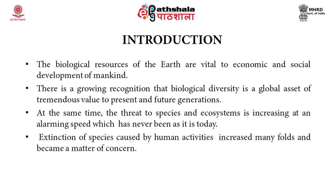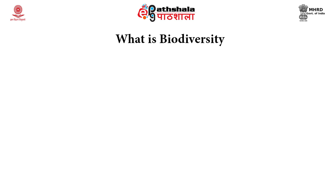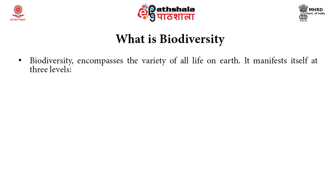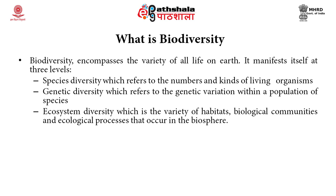To understand the Convention on Biological Diversity, it is very necessary to understand what is biodiversity. Biodiversity includes the variety of all life on earth. It manifests itself at three levels: number one, species diversity, which refers to the number and kinds of living organisms; number two, genetic diversity, which refers to the genetic variations within a population of species; and number three, ecosystem diversity, which is the variety of habitats, biological communities and ecological processes that occur in the biosphere.